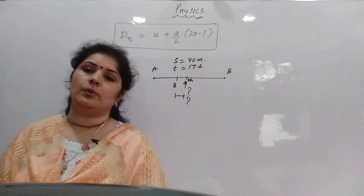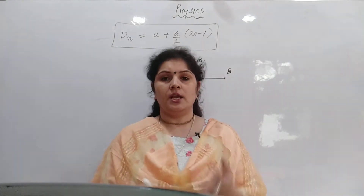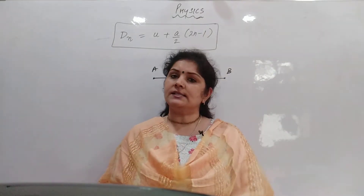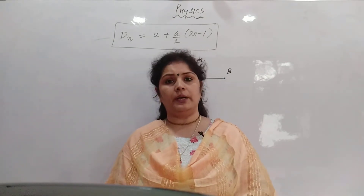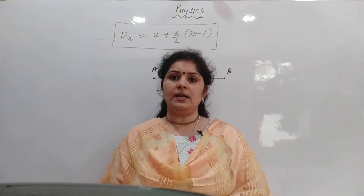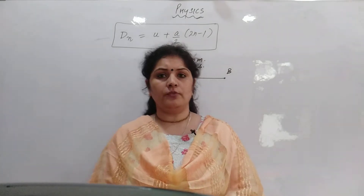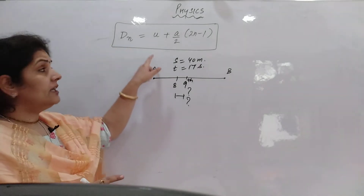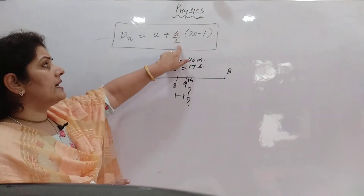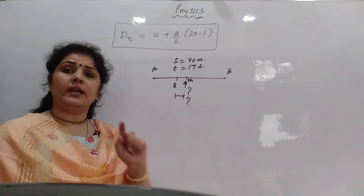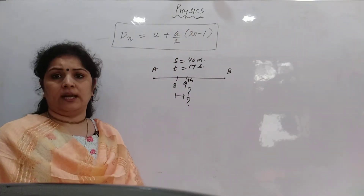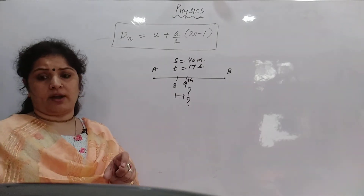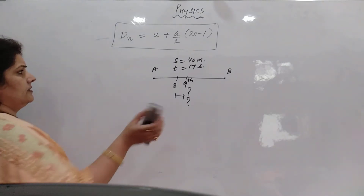In order to prove the fourth equation of motion, we have two ways: first, using the calculus method, and second, by simple arithmetic — how we can calculate the distance covered in the nth second. We will discuss both of them. Dn represents the distance travelled in the nth second. U is the initial velocity of the body. A is the acceleration of the body. And n is that particular nth second — the fifth second, seventh second — how much did the body travel in that particular second.